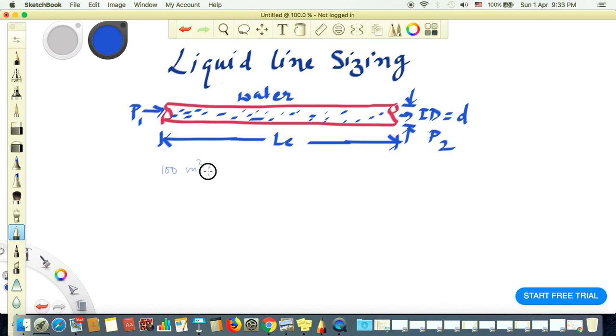The required load is 100 meter cube per hour of water, so density is 1000 kg per meter cube. The inlet pressure P1 is 10 bar and P2 is the outlet pressure. Let's say the required P2 is 9 bar or 9.5 bar.